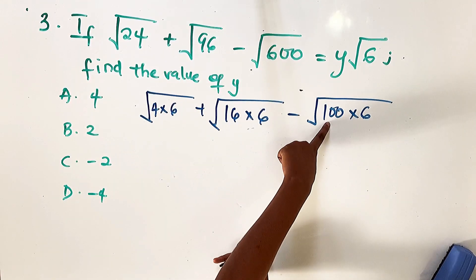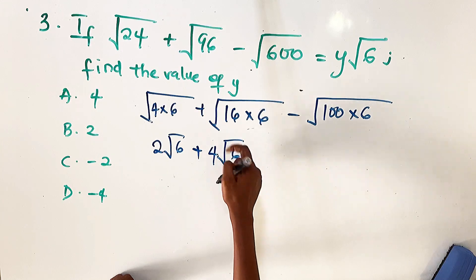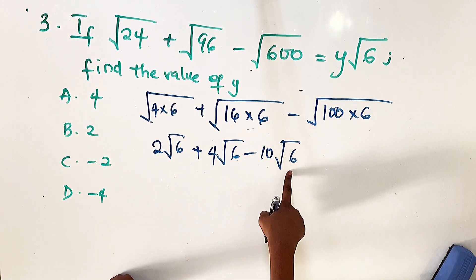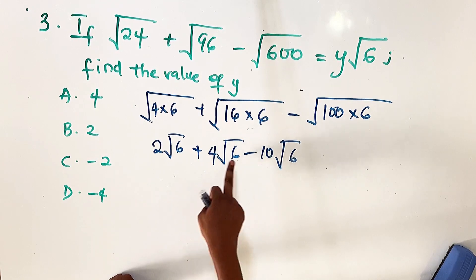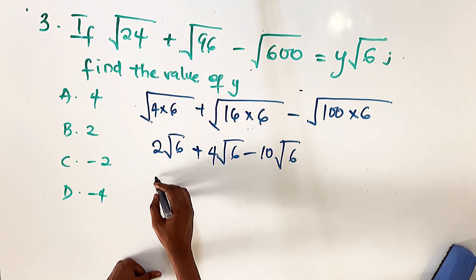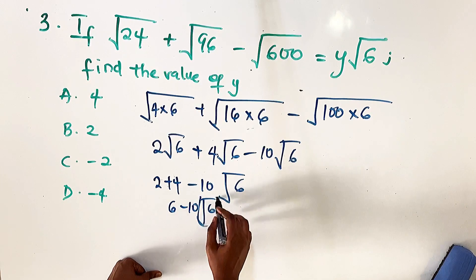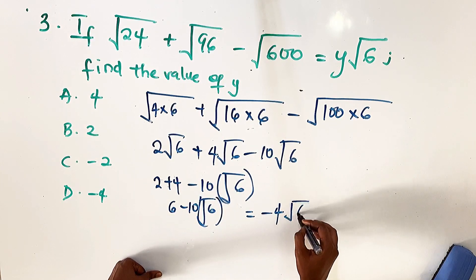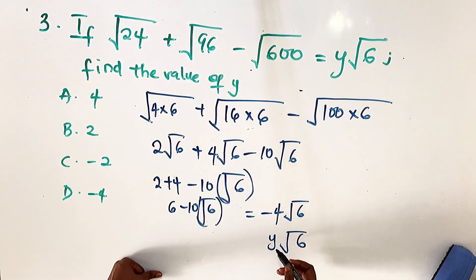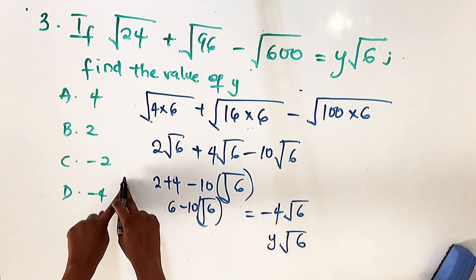The values 4, 16, and 100 are perfect squares. So this becomes 2 root 6 plus 4 root 6 minus 10 root 6. Since root 6 is common, we operate on the coefficients: 2 plus 4 minus 10, all times root 6. That gives (6 minus 10) root 6 — wait, 2 plus 4 is 6, minus 10 gives minus 4 — so the result is minus 4 root 6. Comparing to y root 6, we get y equals minus 4, which is option D.